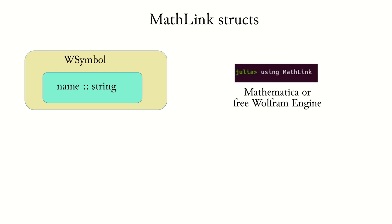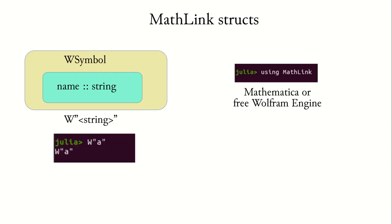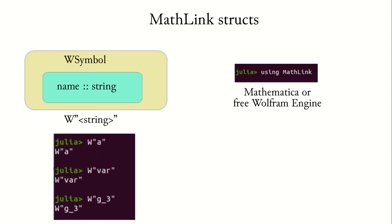The first structure that's defined is the W symbol. This is essentially just a structure whose name is a string, and this represents a Mathematica object. We can construct these with the double quotations syntax, and then the string could be just a letter or a longer variable, and it doesn't have to be only letters.